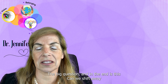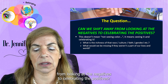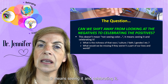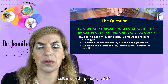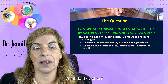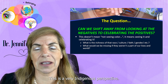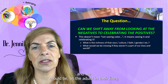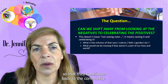The big question in the end is this: Can we shift away from looking at the negatives to celebrating the positives? This doesn't mean not seeing color or not seeing disability — it means seeing it and celebrating it. It means asking: What is the richness of that race, culture, faith, gender, child? What do they bring to our world? What do they offer? What would we be missing if they weren't a part of our lives and world? This is a very indigenous perspective — the children are born with a gift, and we should be, as the adults in their lives, helping them to discover that gift and to develop it so that they contribute back to the community.